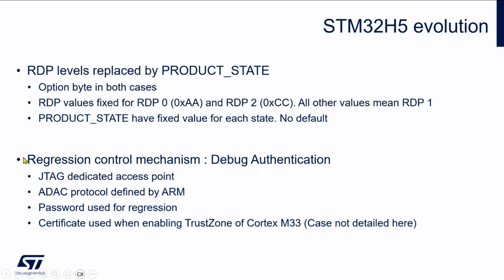Something completely new in this STM32 is the debug authentication feature, accessible through a dedicated access port of the JTAG or SWD. It uses an open protocol from ARM called ADAC, which is available as a specification. We use a password for the regression as we did for the U5, but this password is used only in the legacy usage case where you don't activate TrustZone. If you have higher security requirements, you typically enable TrustZone for isolation between secure and non-secure, and in that case you have a more secure way to open the device through a certificate — but we will address that in the next workshop.